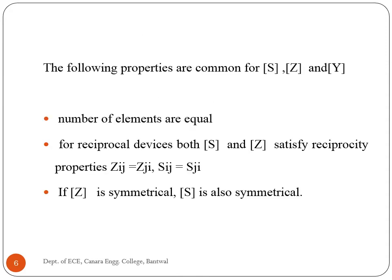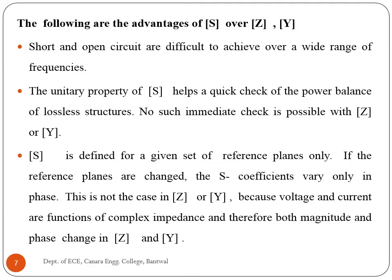The following properties are common for S, Z, and Y matrices: the number of elements are equal; for reciprocal devices both S matrix and Z matrix satisfy reciprocity properties; if the Z matrix is symmetrical, the S matrix is also symmetrical. The advantages of S matrix over Z and Y matrices include: equipment is not readily available to measure total voltage and total current at the port of the network; short circuit and open circuit are difficult to achieve over a wide range of frequencies; the presence of active devices such as power transistors and tunnel diodes makes short and open circuit conditions unusable.